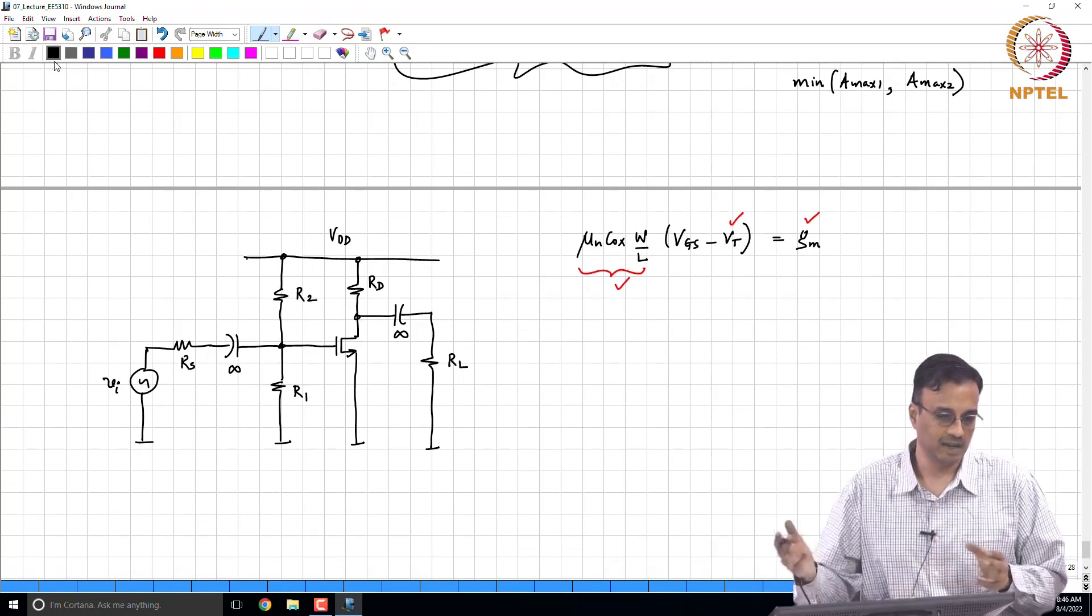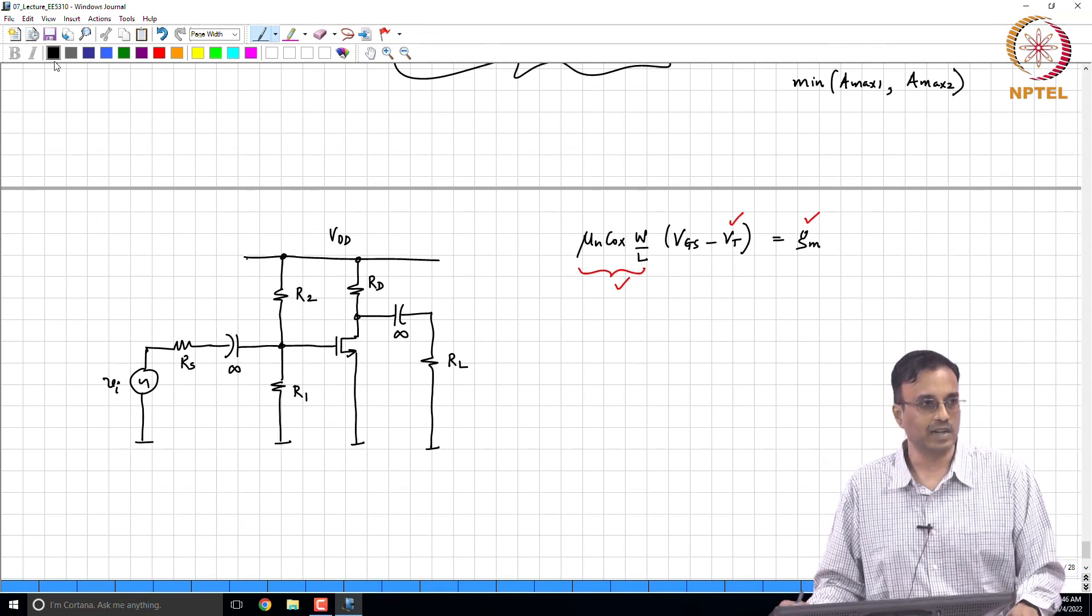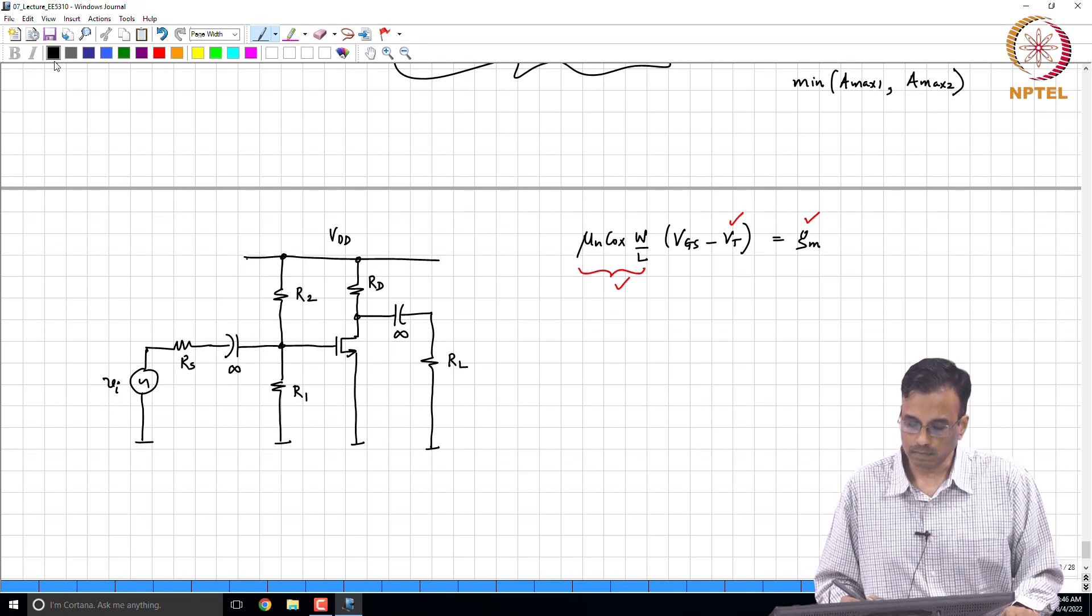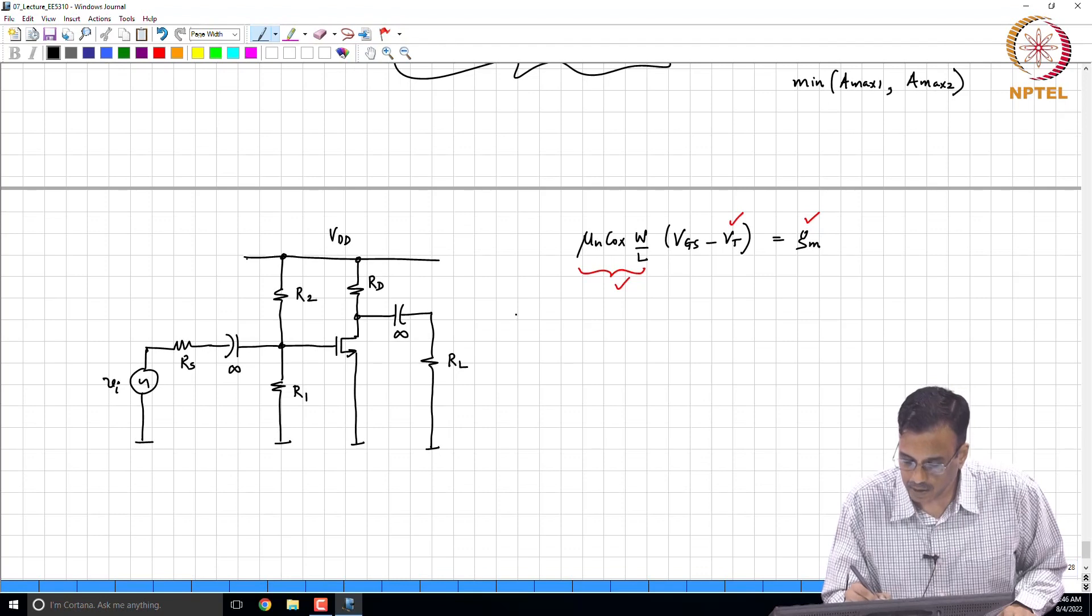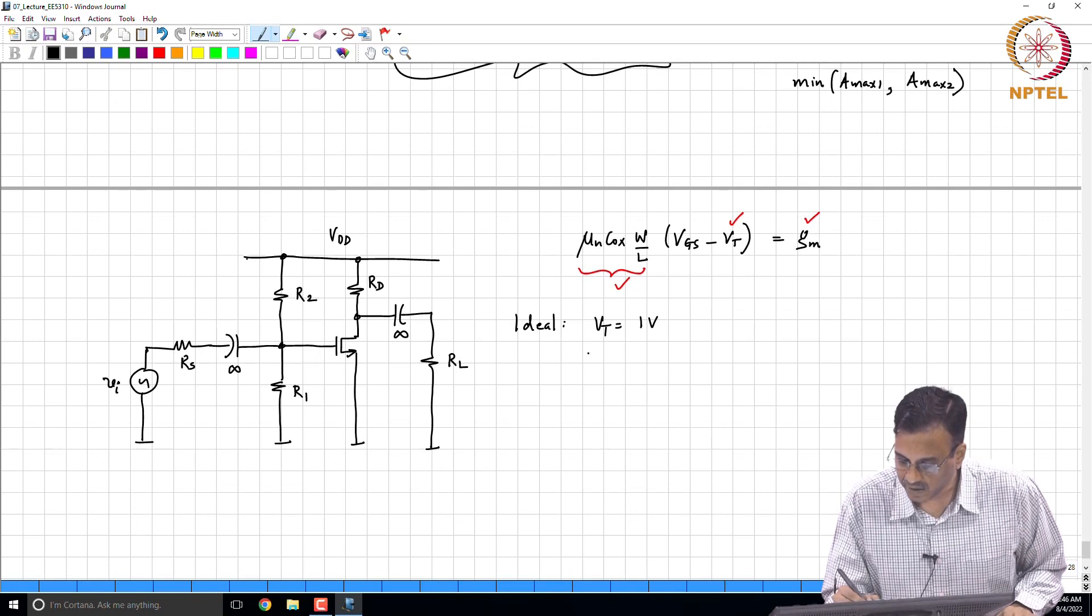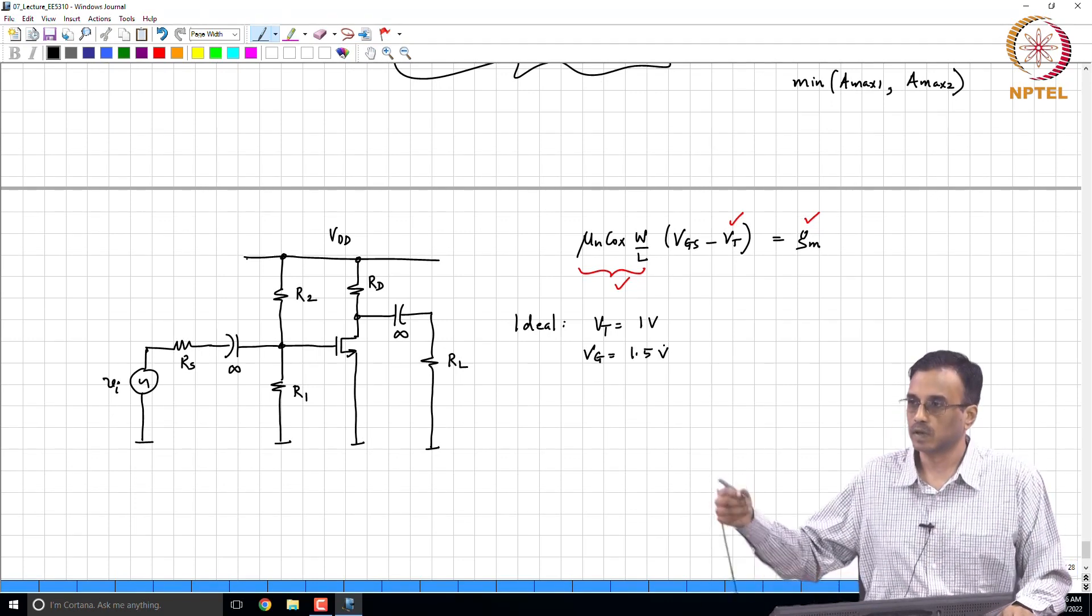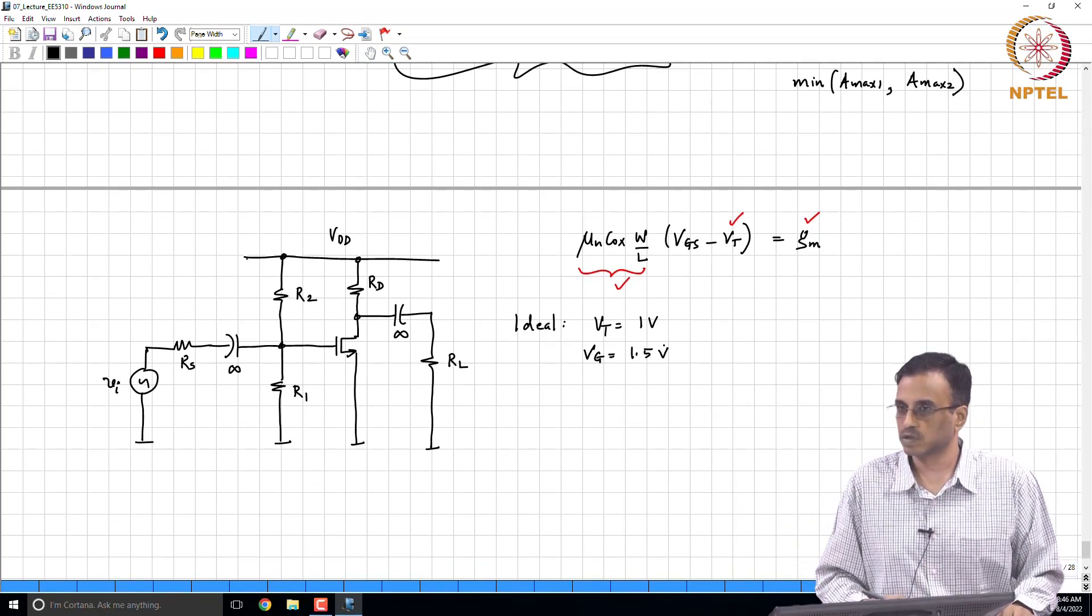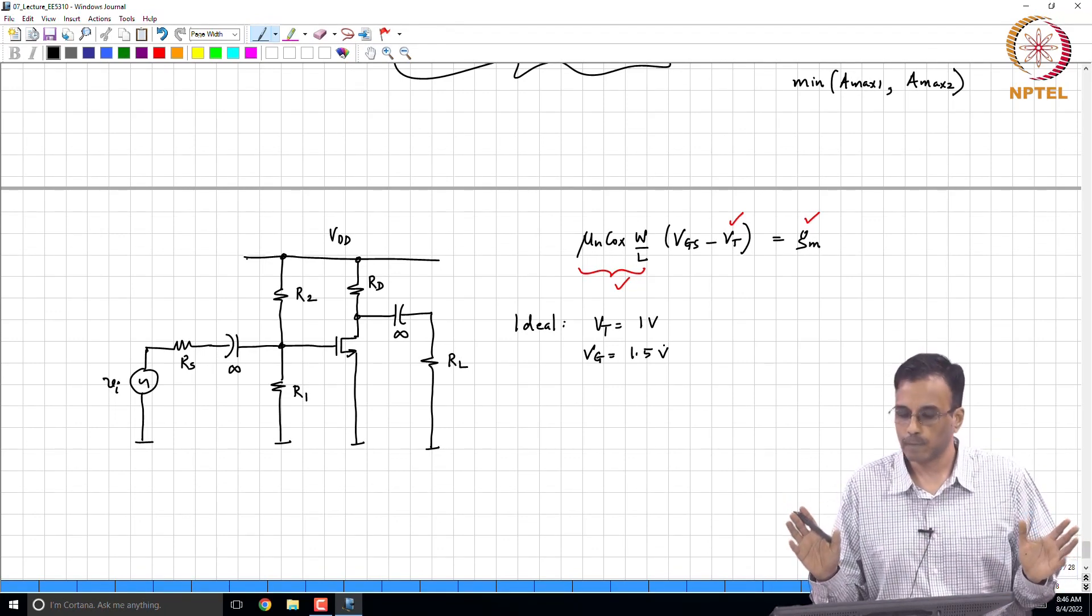And unfortunately, the transistor came back from the fabrication house and the V_T turned out to be not 1 volt but 1.2 volts. So earlier, let's say the quiescent voltage - ideally V_T was 1 volt and the gate quiescent voltage was 1.5 volts. R2 and R1 and VDD were chosen such that the gate voltage was 1.5 volts, because we wanted a V_GS minus V_T of half a volt.